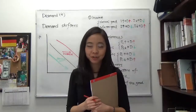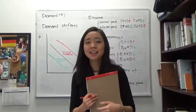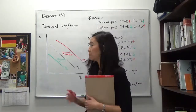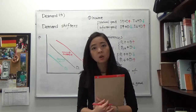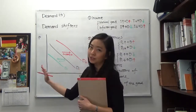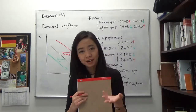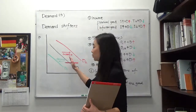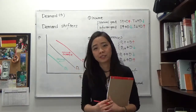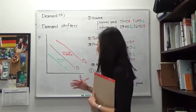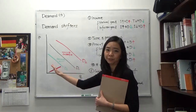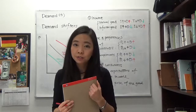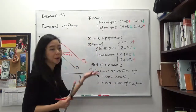Hello everyone, my name is Iris Franz and today we're going to continue to talk about demand. In particular, demand shifters, meaning what will increase or decrease our demand. When there is an increase in demand, that will shift the demand curve to the right. And when there is a decrease in demand, that will shift our demand curve to the left. There are several factors that would affect our demand, and we're going to talk about them one by one.